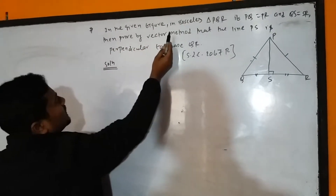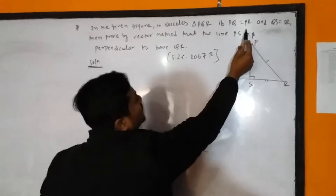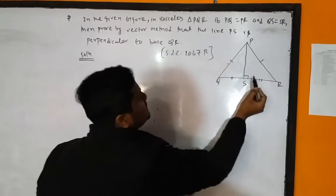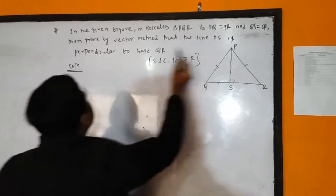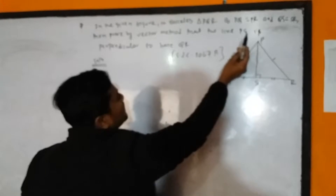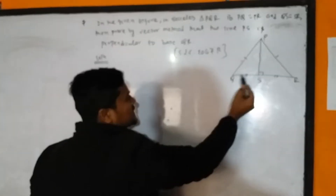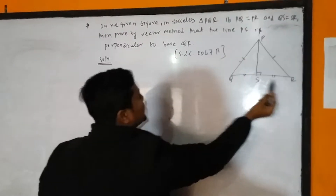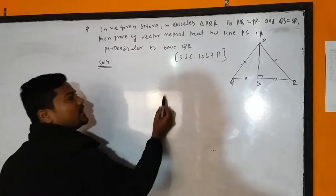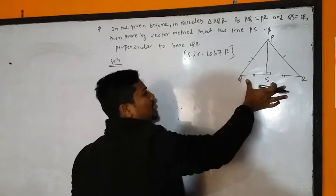In the given figure, in isosceles triangle PQR, if PQ is equal to PR and QS is equal to SR, prove by vector method that the line PS is perpendicular to the base QR. This question was already asked in SLC 2067 and is very important.